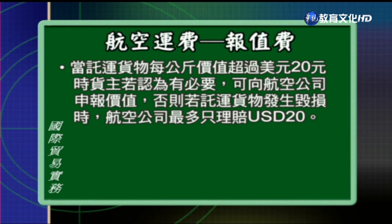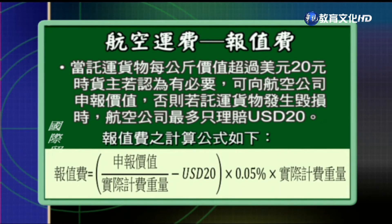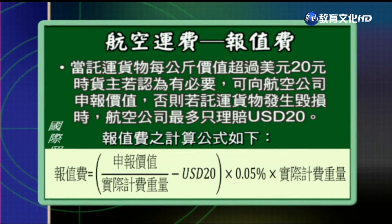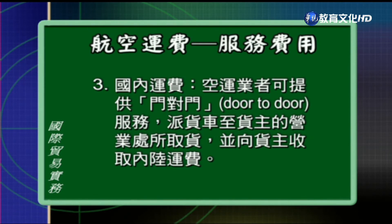除了空运费之外，有时候也会申报价值，这时候航空公司就会加收报值费。所谓报值费是指托运货物每公斤价值超过美元20元的时候，向航空公司申报价值；如果没有申报价值，万一货物发生毁损，航空公司最多只赔美元20元而已。报值费的计算公式是把申报价值除以实际计费重量，减掉美元20元之后，乘上0.05%，再乘以实际的计费重量。除了报值费之外，航空公司也可能收服务费，像是报关费、仓储费还有国内运费等等，这些都是航空公司提供服务而加收的费用。